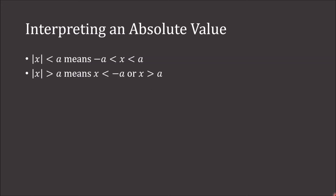So interpreting an absolute value: the absolute value of x less than a means that negative a is less than x less than a. The absolute value of x greater than a means x is less than negative a or x is greater than a. These two interpretations also hold for less than or equal to and greater than or equal to, respectively.